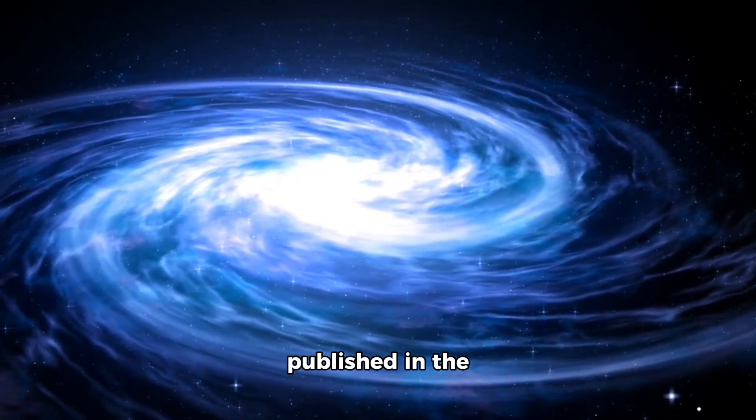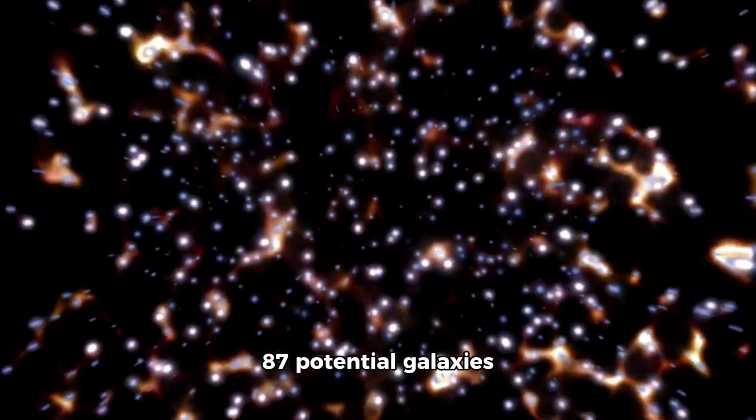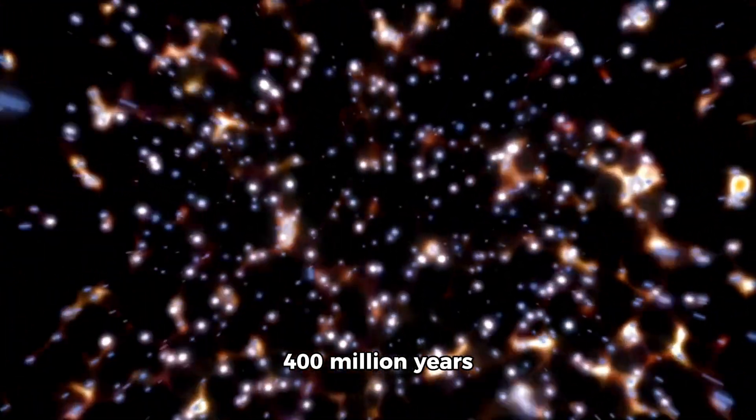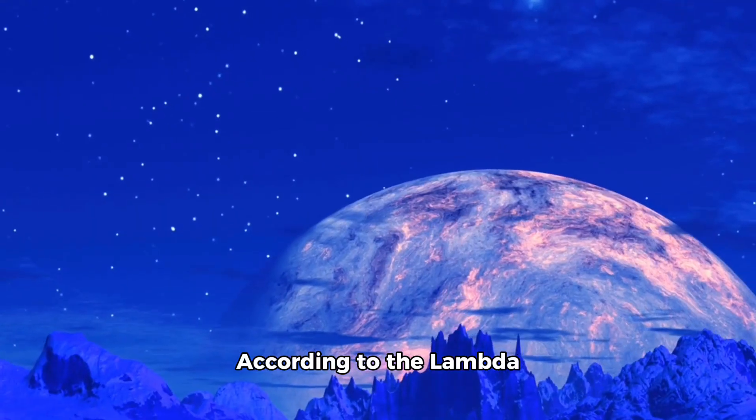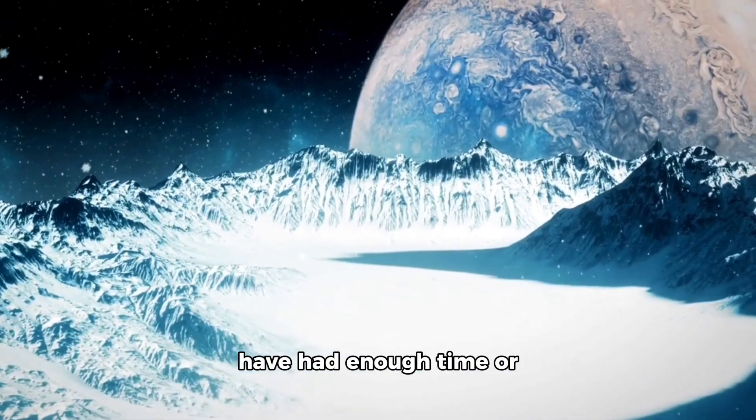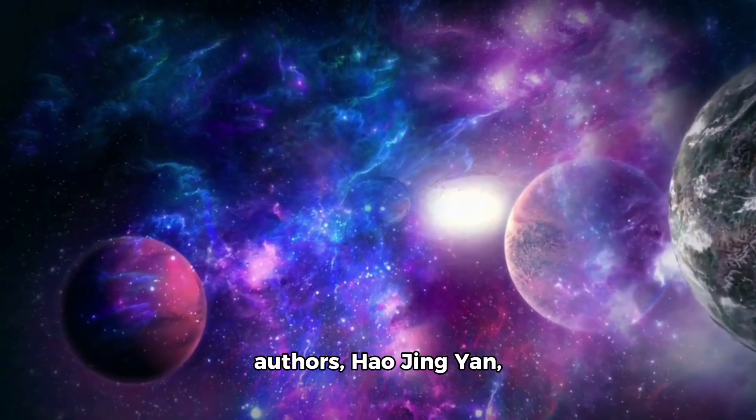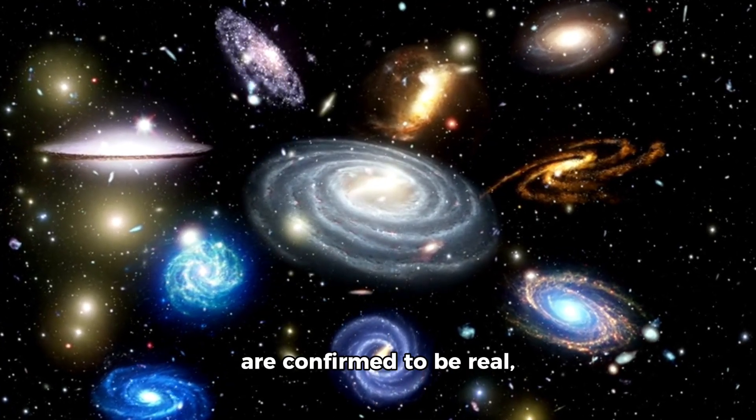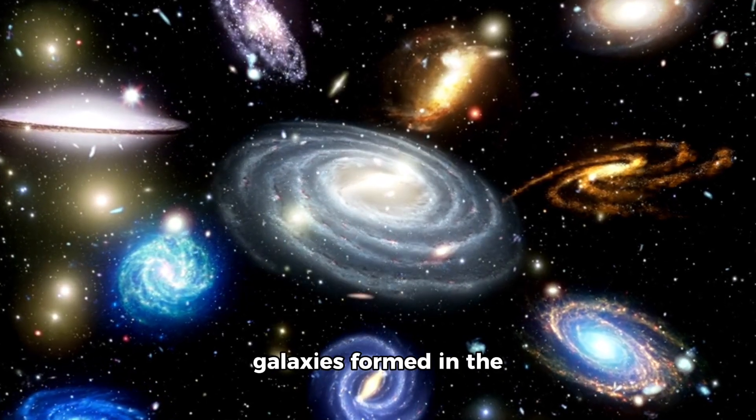In fact, a recent study published in the Astrophysical Journal revealed something jaw-dropping. Researchers identified 87 potential galaxies that could have existed only 200 to 400 million years after the Big Bang. Yeah, that early. And here's why that's a problem. According to the Lambda-CDM model, the same one we've trusted for years, the universe shouldn't have had enough time or material to make that many galaxies that fast. One of the study's authors, Hao Jingyan, summed it up perfectly. He basically said, even if a few of these galaxies are confirmed to be real, it would mean we seriously need to rethink how galaxies formed in the early universe.